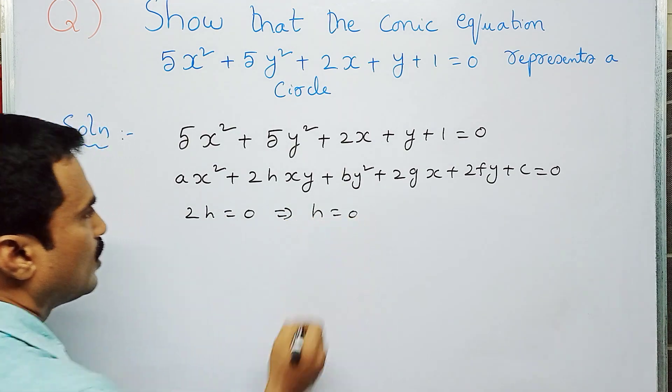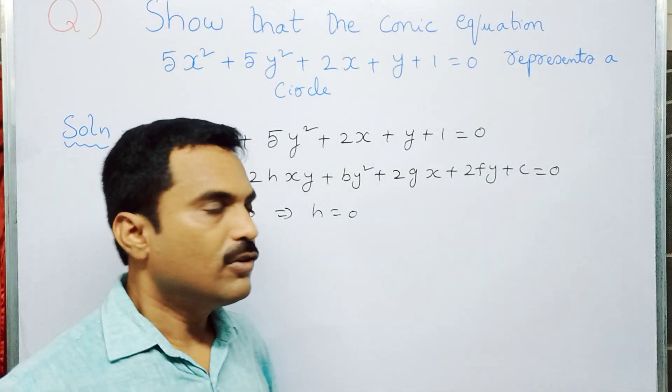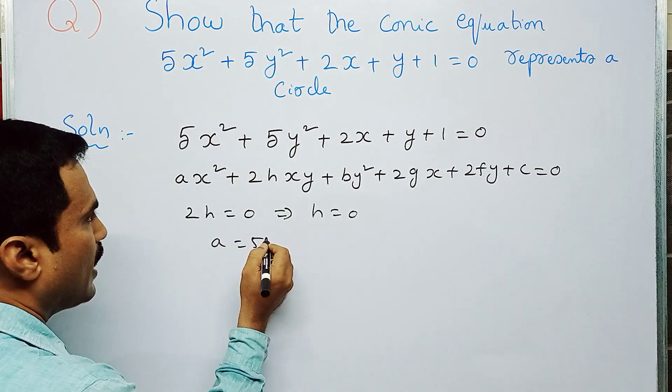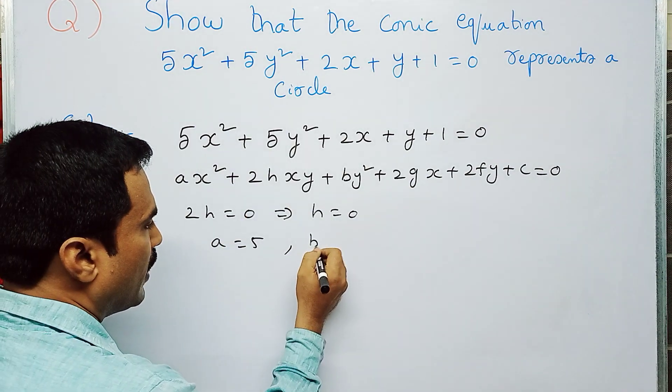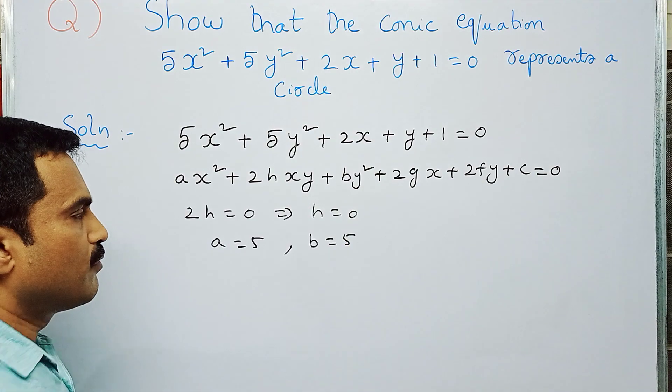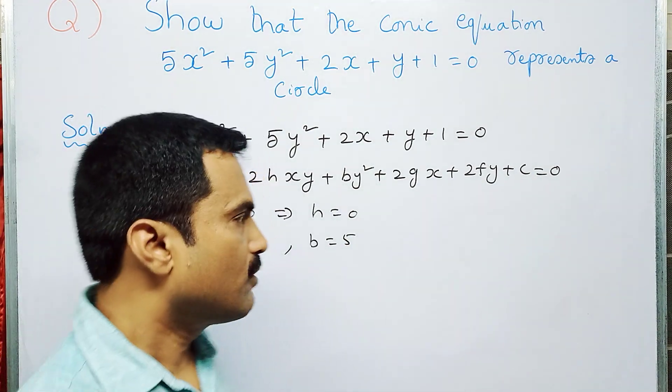Now, a value is 5 and b value is 5. Therefore, from this you can conclude that h = 0 and a = b.